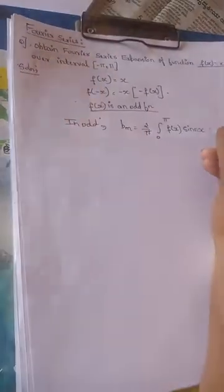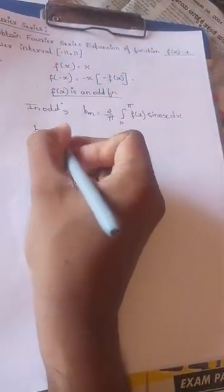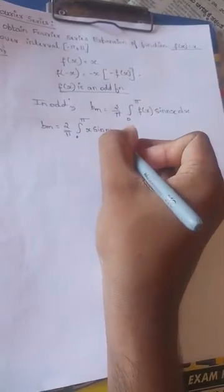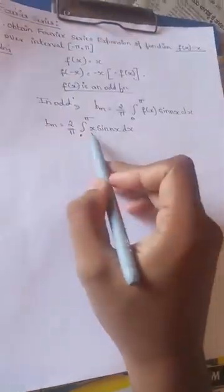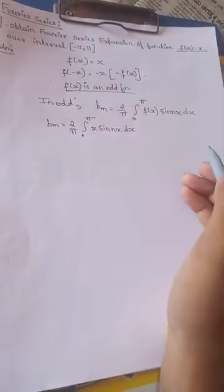Now let's substitute the value of f(x): bn equals 2 over pi, integral from 0 to pi of x sin(nx) dx. We can see that there are two functions — x and sin(nx) — so we can use Bernoulli's method.